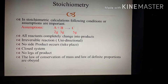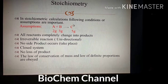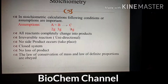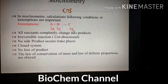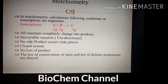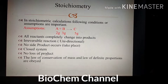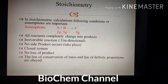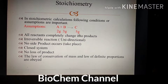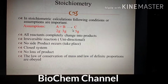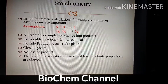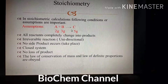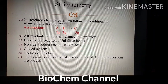The fifth assumption is no loss of product — the product formed should not be lost, so its quantity remains 5 grams. The last assumption is that the law of conservation of mass and the law of definite proportions must be obeyed, so that stoichiometric calculations can be done properly.